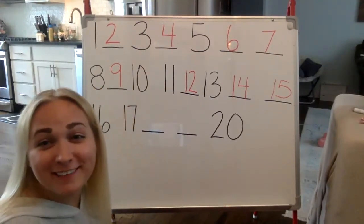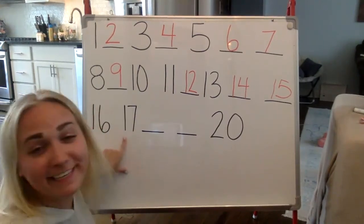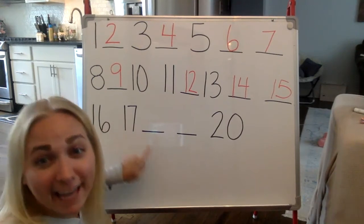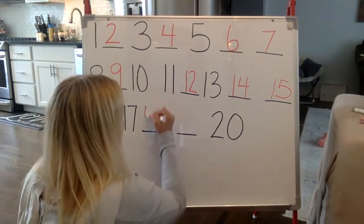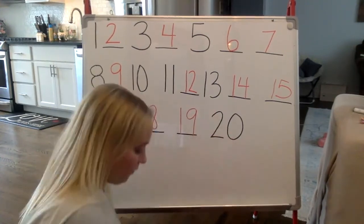All right, so we got to the end of that one. It said sixteen, seventeen. Then what came next? Eighteen, nineteen, twenty. So eighteen, nineteen, and twenty.